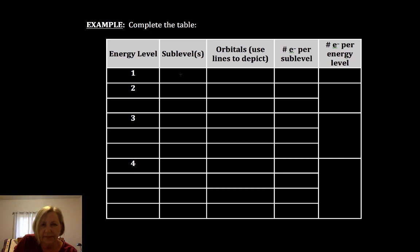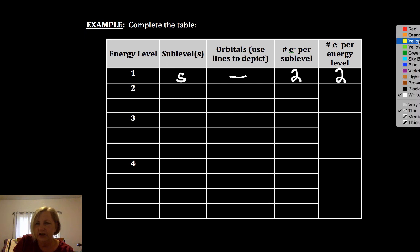Energy level one has one sublevel - it only has an S - and that S has one line. Two electrons can go in each orbital, so there's only two electrons in the sublevel and two electrons in the energy level.